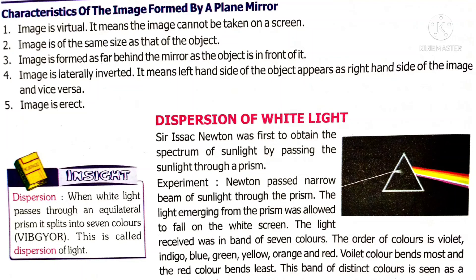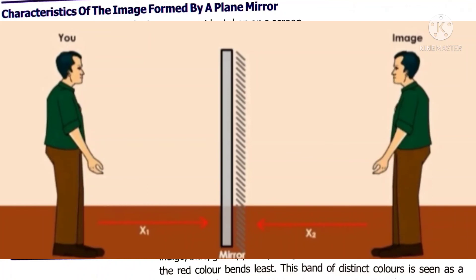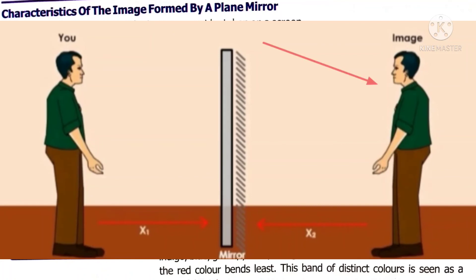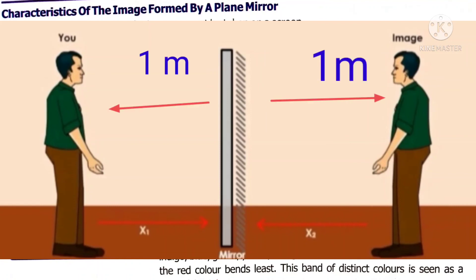The image is formed as far behind the mirror as the object is in front of it. For example, if you are standing 1 meter away from the mirror, the image will form 1 meter inside the mirror, so the distance between you and the image is 2 meters. Additionally, the image is laterally inverted and always erect.